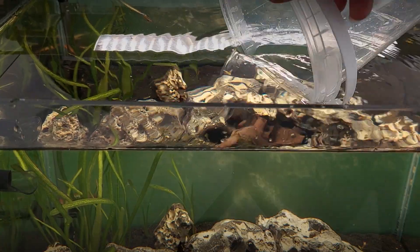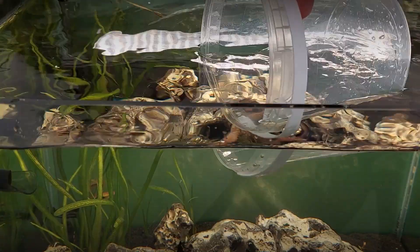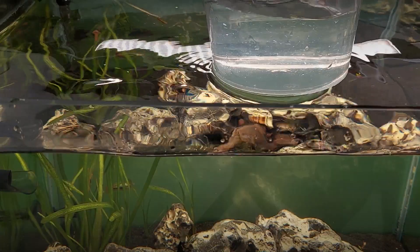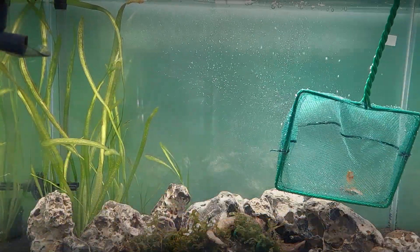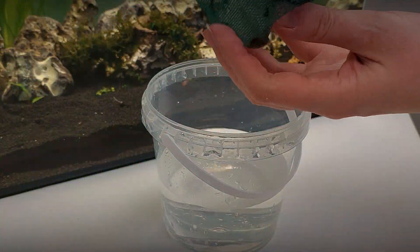Rinse the container with aquarium water and fill it with enough water to cover the fish. Catch the fish with the net and place it inside the container.